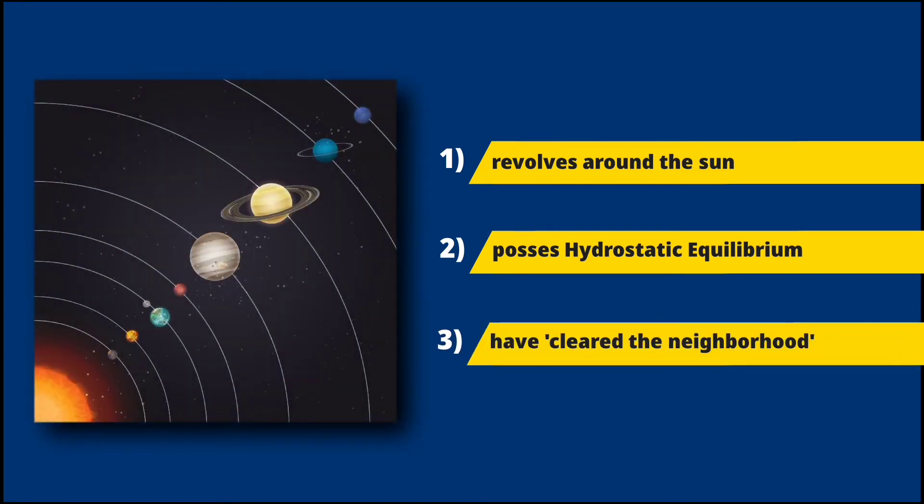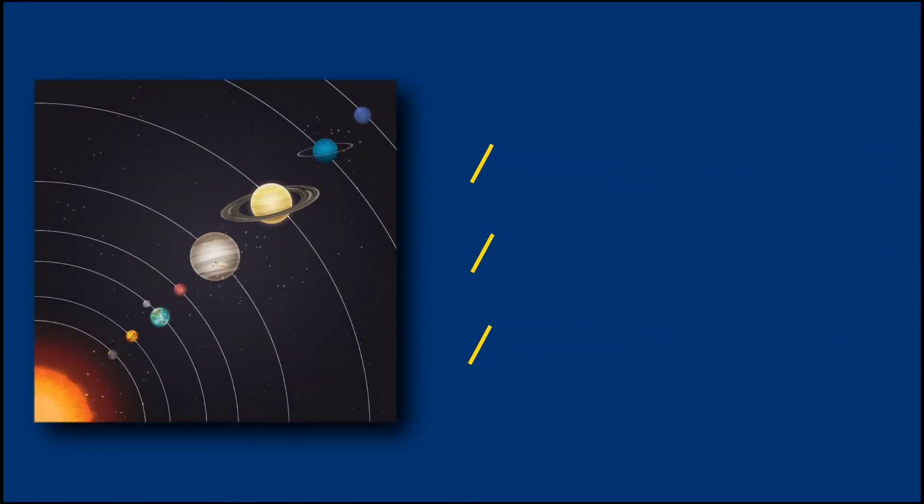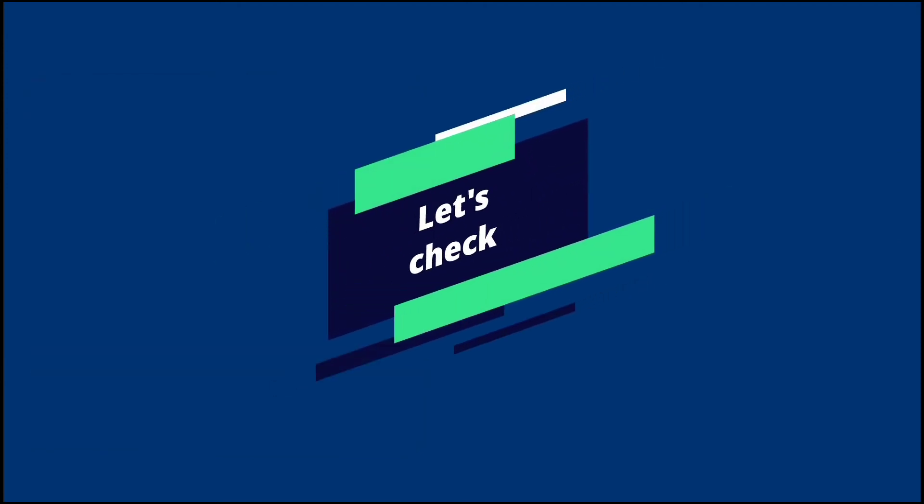Third, it must have cleared the neighborhood around its orbit, such as debris and asteroids. Let's check Pluto with these conditions.